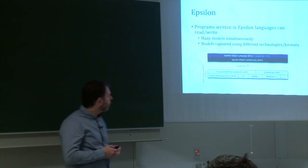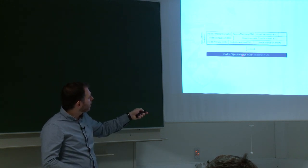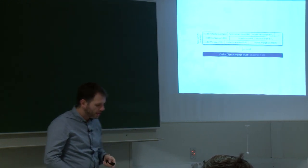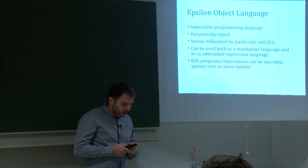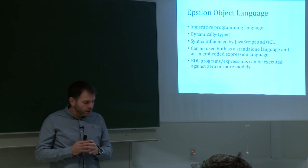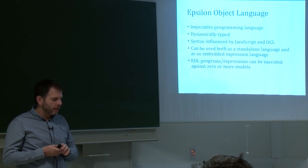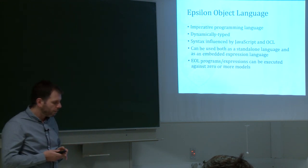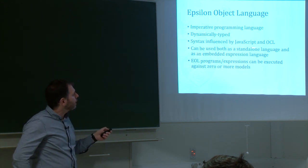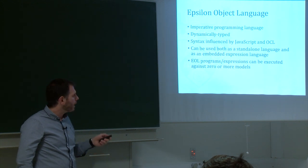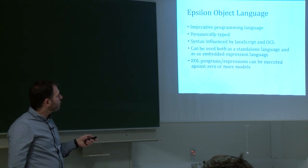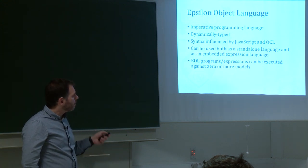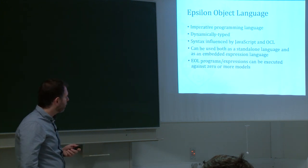EOL is the core expression language of Epsilon. It's an imperative programming language, dynamically typed — so you don't get much helpful code completion in the editor. Its syntax has been influenced historically by OCL, the object constraint language, and JavaScript. It can be used both as a standalone language and as an embedded expression language in higher-level languages of the Epsilon platform.